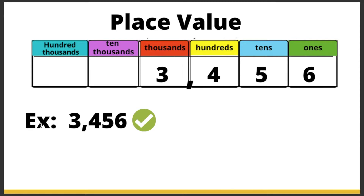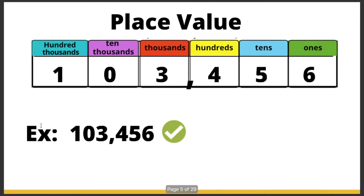Let's do the second example: one hundred and three thousand, four hundred fifty-six. We did the last example as three thousand four hundred fifty-six. Here we added a hundred and three thousand, so the zero goes in the ten thousands place and the one goes in the hundred thousands place.